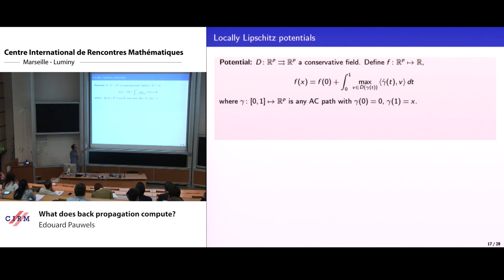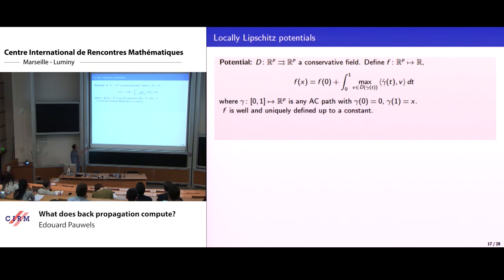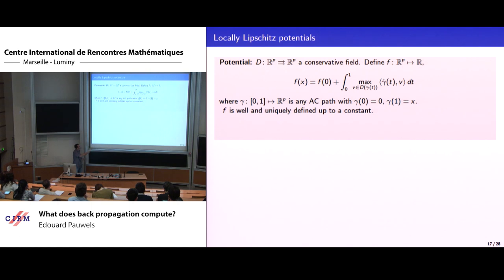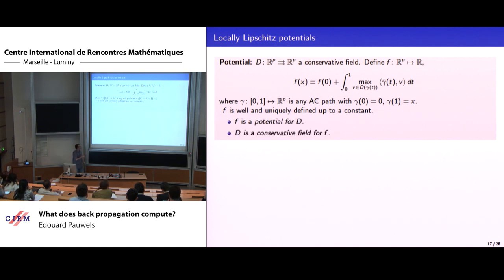If you choose two different paths you get the same integral, so the value of f is well-defined up to a constant — in particular it does not depend on the path. The vocabulary we use: f is a potential for the conservative field D, and D is a conservative field for f.